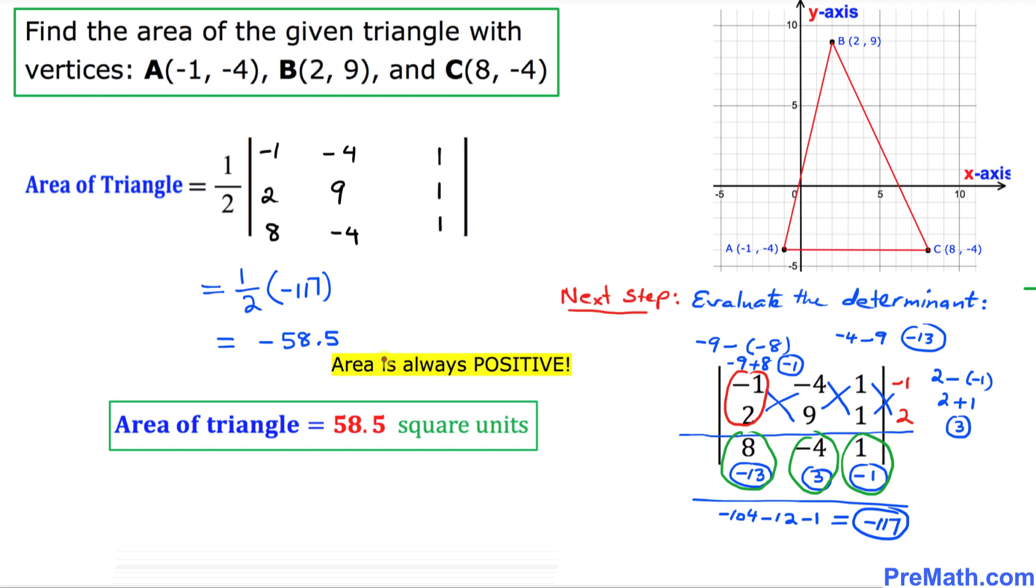And we know that the area is always positive, so this number is going to become positive. Thus the area of the triangle turns out to be 58.5 square units and that is our answer.